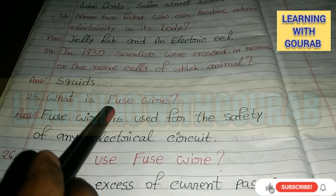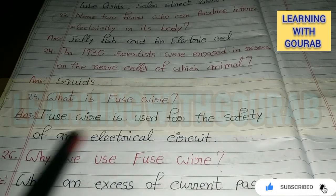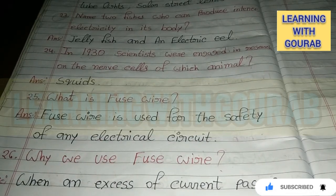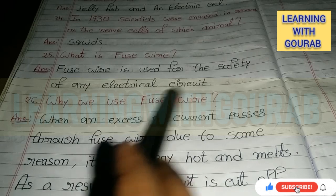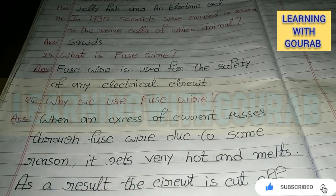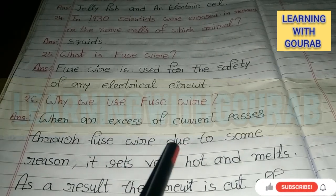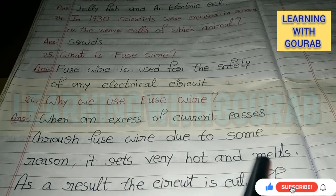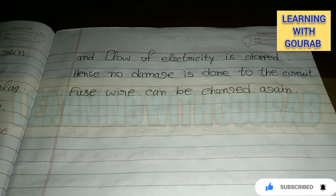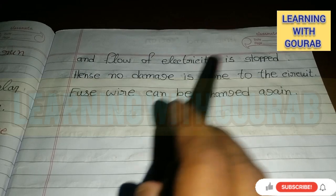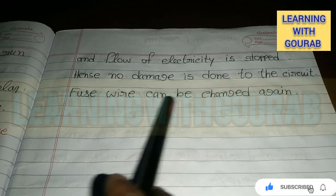Next question: What is fuse wire? Answer: Fuse wire is used for the safety of any electrical circuit. When an excess of current passes through fuse wire for some reason, it gets very hot and melts. As a result, the circuit is cut off and the flow of electricity is stopped, so no damage is done to the circuit. Fuse wire can be changed again.